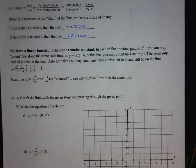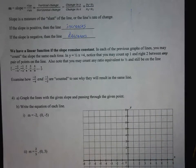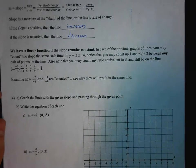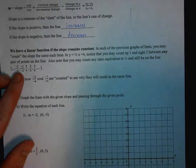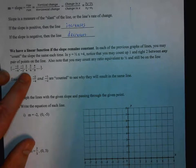We have a linear function or linear relationship if the slope remains constant. In each of the previous graphs, you may count the slope the same each time. In y equals 1 half x plus 4, you may count up 1 and to the right 2 between any pair of points on the line. Also notice you may count an equivalent ratio to 1 half and still be on the line — for example, negative 2 over negative 4, negative 1 over negative 2, 2 over 4, and so on.